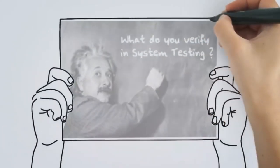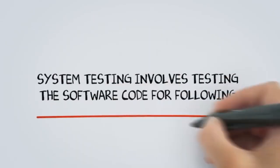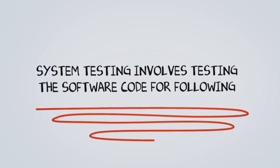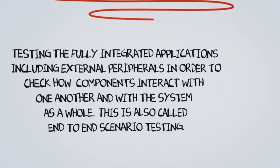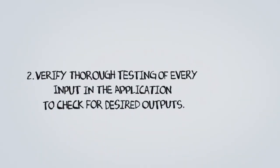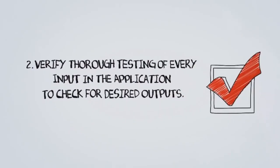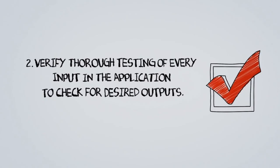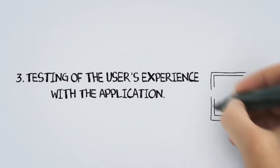What do you verify in system testing? System testing involves testing the software code for the following: testing the fully integrated applications including external peripherals in order to check how components interact with one another and with the system as a whole — this is also called end-to-end scenario testing. It also involves verifying every input in the application to check for desired outputs, and testing of the user's experience with the application.